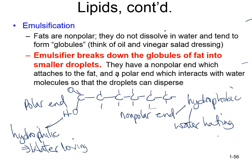The soap or emulsifier will attach to the non-polar side of fat, so that the fat itself can interact with water, and the other part of the soap attaches to disperse the fatty molecules. The overall process is emulsification — the breaking down of globules of fat into smaller droplets.